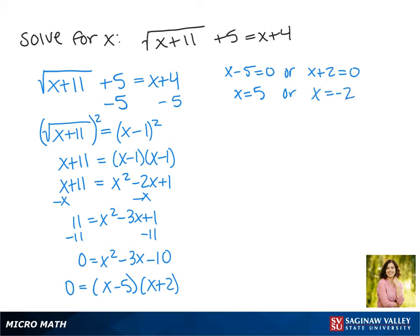We have to check these solutions to make sure they aren't extraneous, so we are going to plug them back into our equation. We get the square root of 5 plus 11 plus 5 equals 5 plus 4. We have to evaluate this and not move anything across the equal sign. Working this out gives us 4 plus 5 equals 5 plus 4. This is true, 9 equals 9, so 5 is a solution.